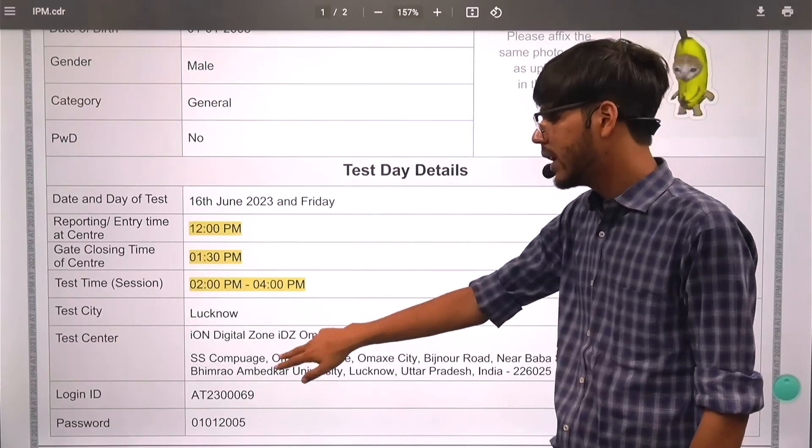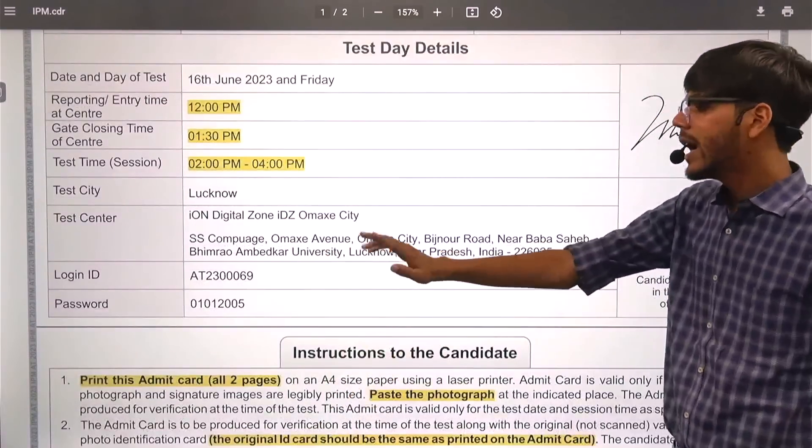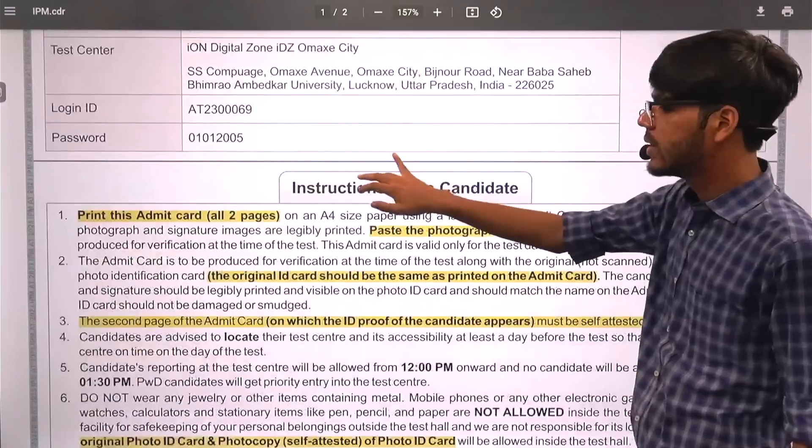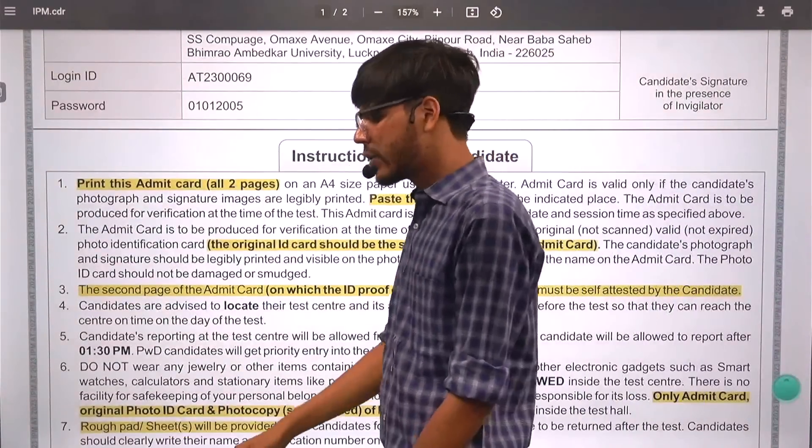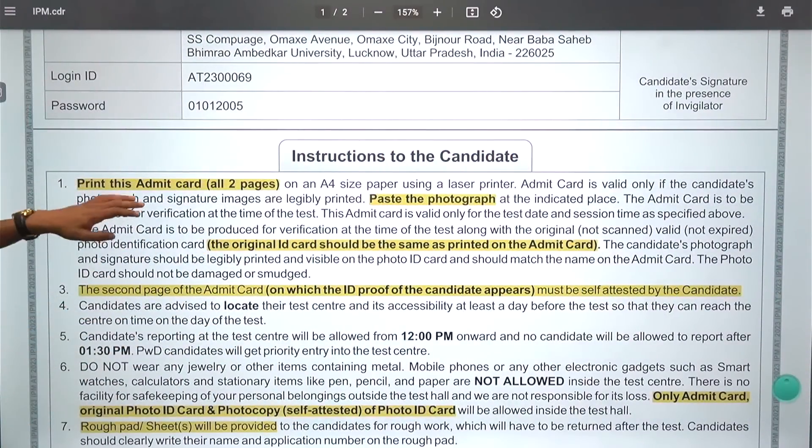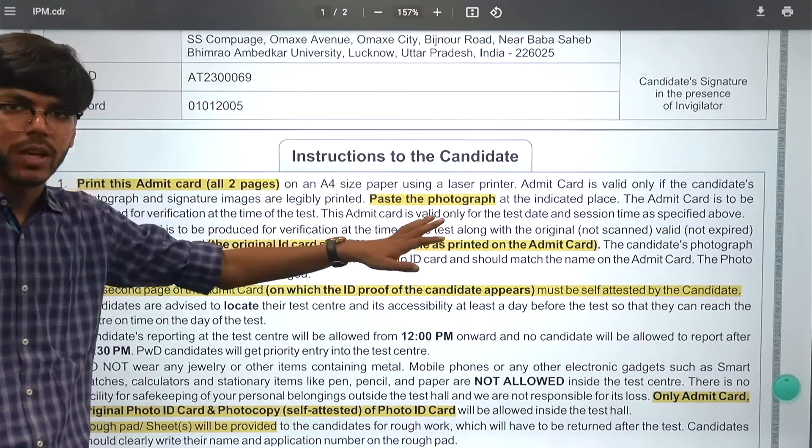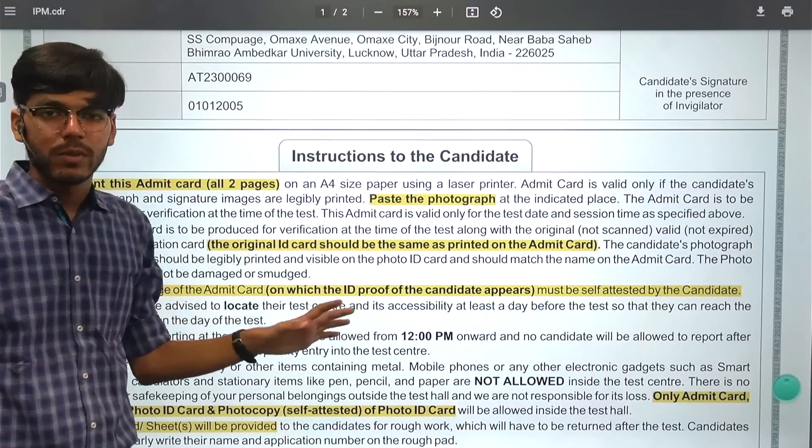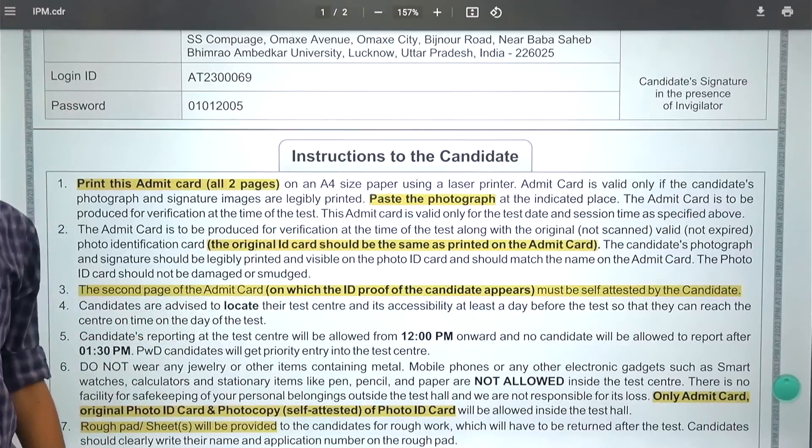That is how it should be. Your center detail, everything is here. ID password. This will be useful when you are starting your test. Once you reach there in terms of what all you need to carry, of course, you need to print this admit card, both the pages, which are attached. You don't have to worry about having a laser printer or anything. As long as you have a normal printer, which can legibly print everything. It won't be a problem, but make sure it is legible. Everything is properly visible.